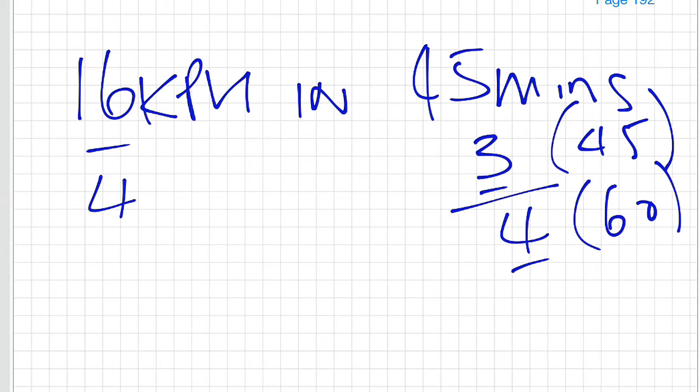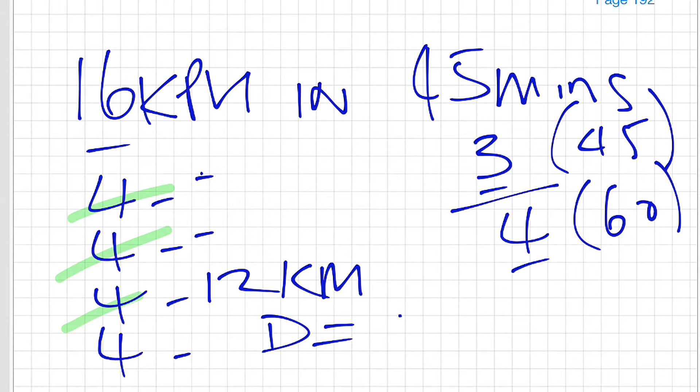So 3 quarters of 16 would be our answer. You could go 1, 2, 3, there's our 4 quarters: 4, 8, 12, 16. If I was to take 3 quarters of that, here's 1 quarter, 2 quarters and 3 quarters, that would give me 4, 8, 12 and the answer would be 12 kilometres covered. So that's our distance. Because we have this nice easy 45 minutes, it converts easily into a fraction and you could use that method to determine the distance covered fairly quickly.